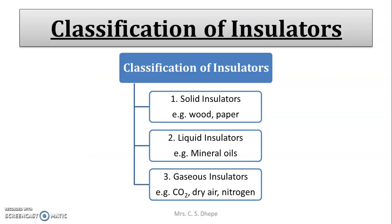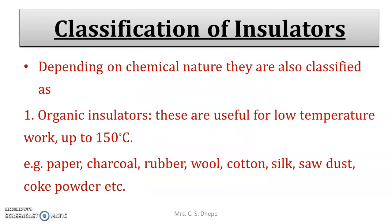Now let us see the classification of insulating material. There are mainly three types. First, solid insulators — examples are wood, paper, rubber, and plastic. Second, liquid insulators — mineral oils are an example. Third, gaseous insulators — examples include carbon dioxide, dry air, and nitrogen.